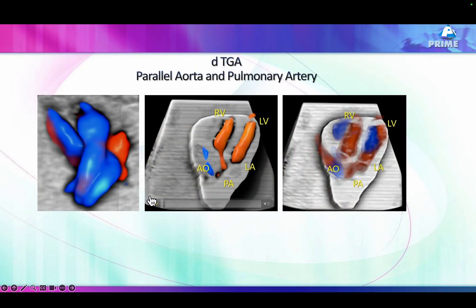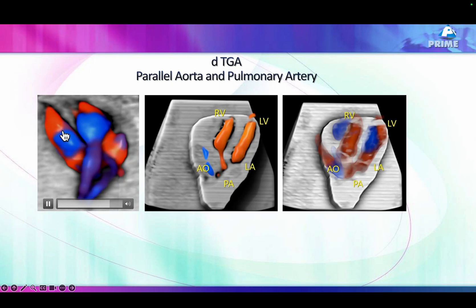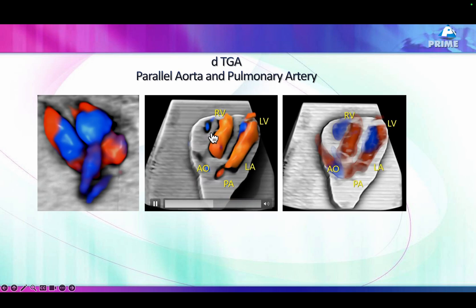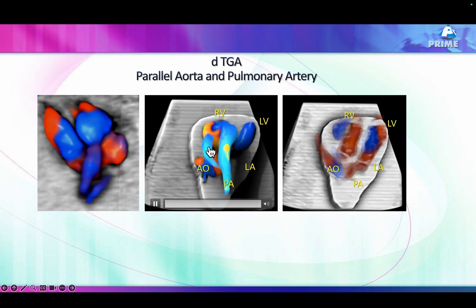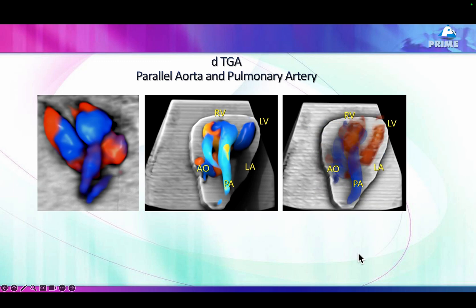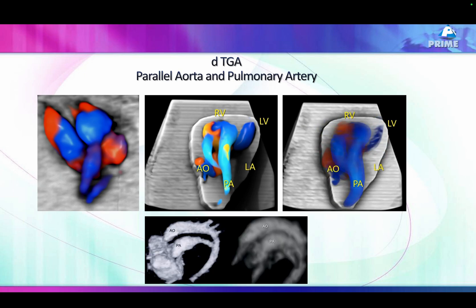The crossover rules out TGA — if there is a crossover, it's not TGA. But if both vessels are parallel to each other, this is an indirect sign of transposition of great arteries. As you can see here, there is a crossover: the aorta is going this way and the pulmonary artery crosses at 90 degrees — this is a patient with DORV. In the other case, the vessels are going parallel, and these two parallel vessels indicate transposition or malposition of the great arteries.